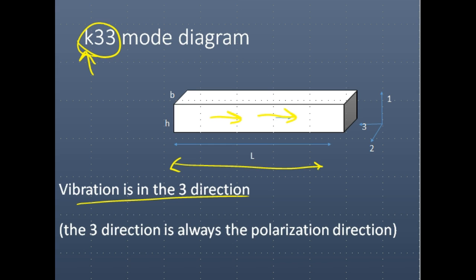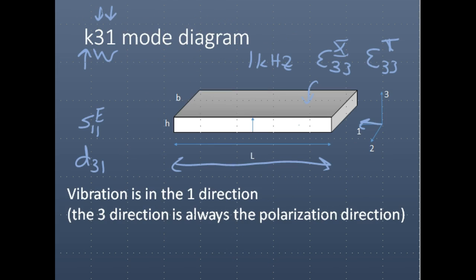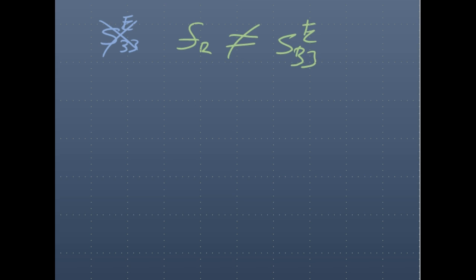Now, how about the K33 mode? What's special about it and how is it different? We're applying electric field in the 3-direction and making vibration in the 3-direction. One would think you'd see results according to S33 superscript E. However, this is wrong. For the K31 resonator, the resonance frequency corresponds to S11 superscript E for the reasons just mentioned. But the resonance frequency for the K33 resonator does not correspond to S33 superscript E.